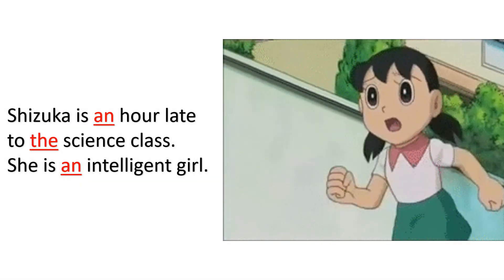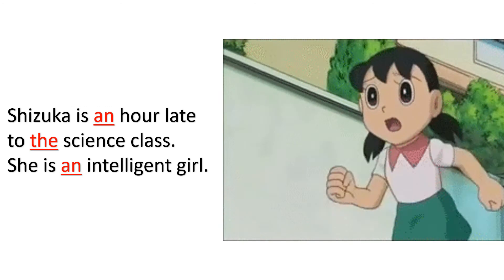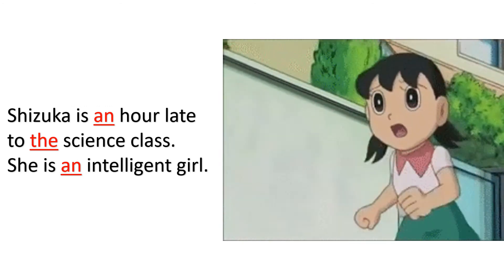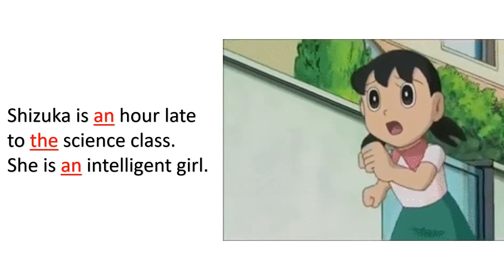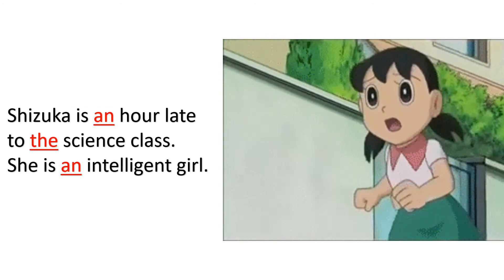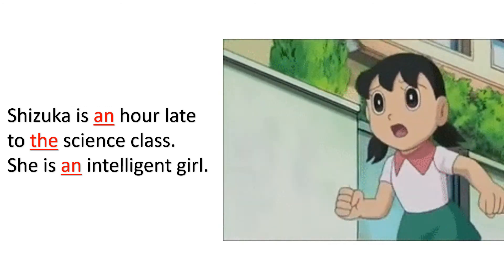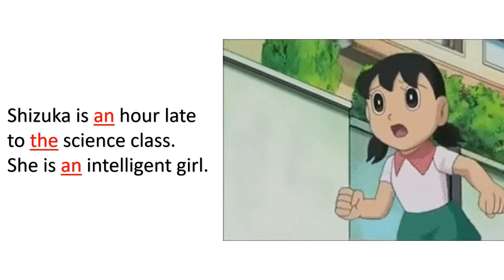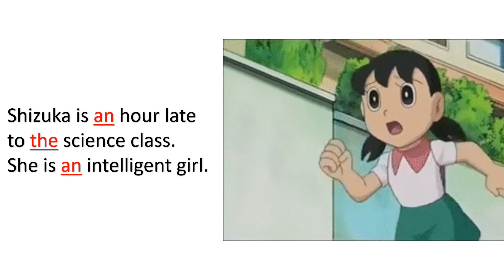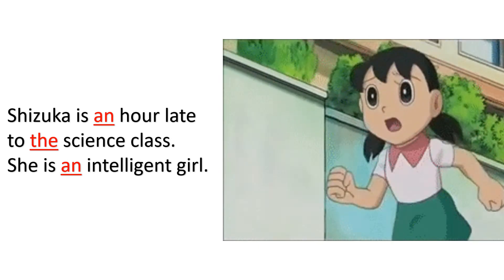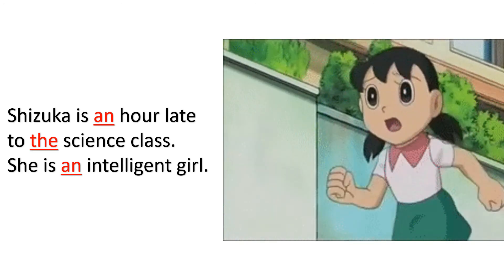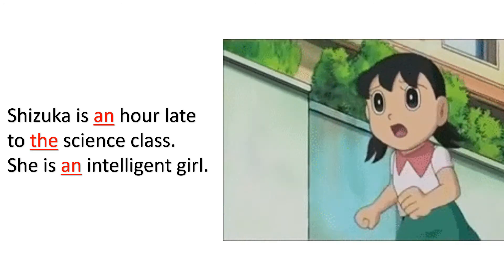'Shizuka is an hour late to the science class.' 'She is an intelligent girl.' 'An' is used before 'hour' because its pronunciation starts with a vowel sound — it is pronounced 'our', not 'har'.